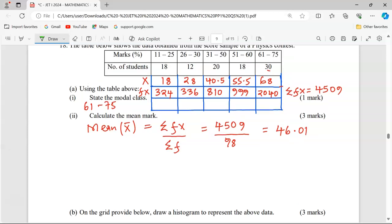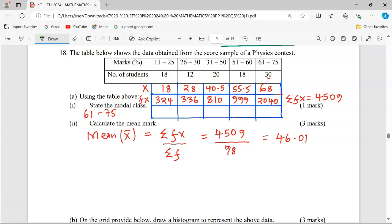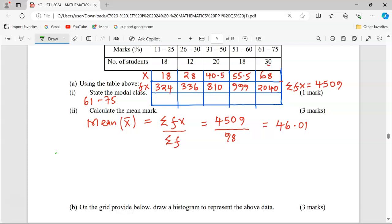With ordinary histograms where the class widths are the same, we plot frequency against class boundaries. But for this case, the class intervals are not the same, so we have to calculate frequency density. Frequency density is given by the frequency of a class divided by its width.